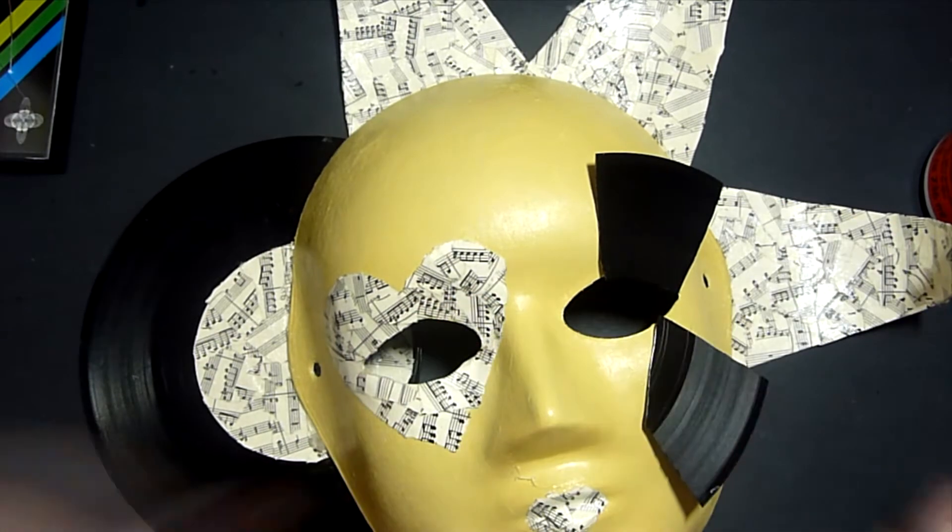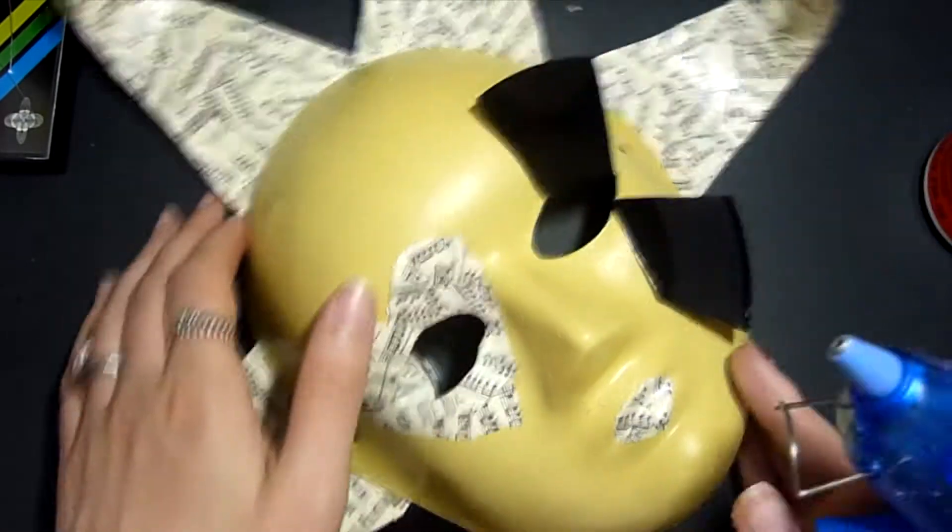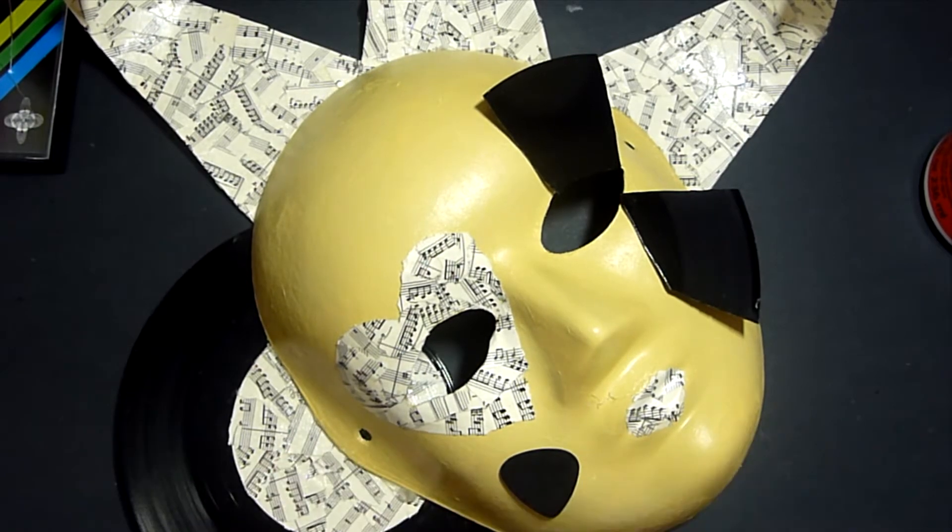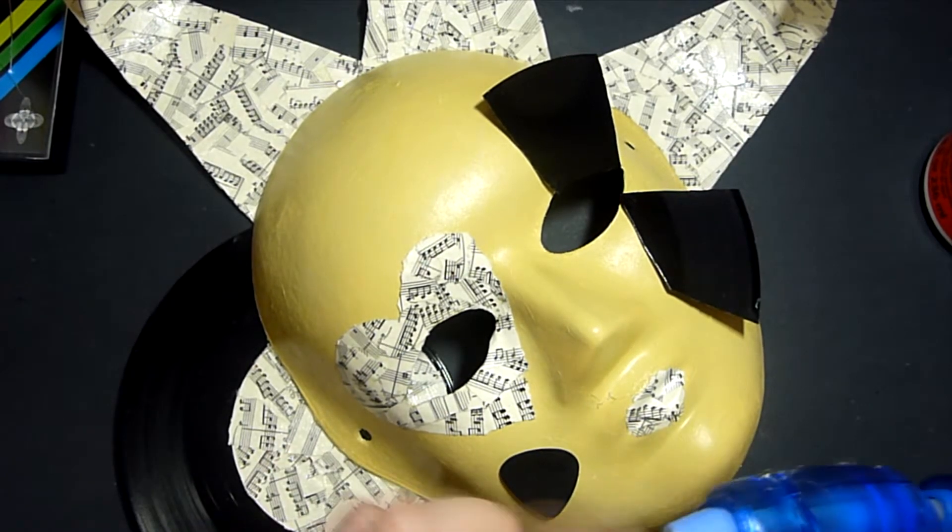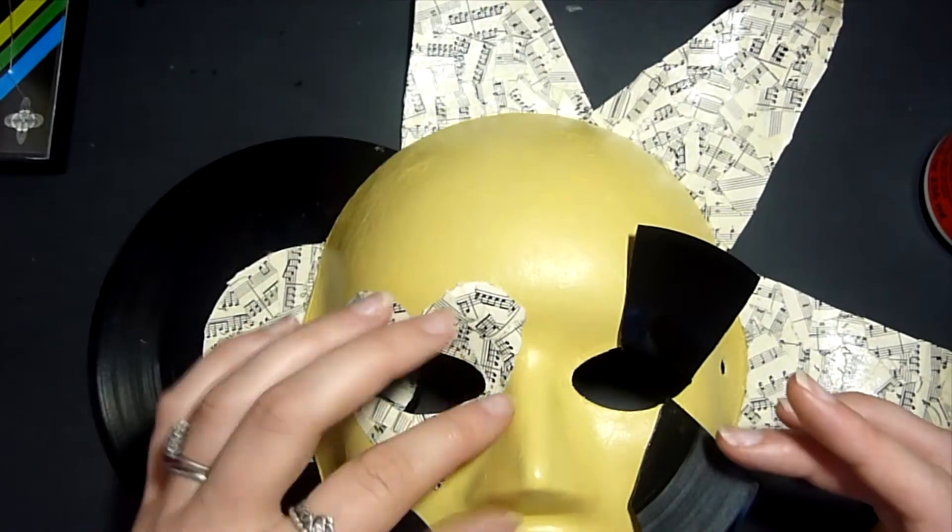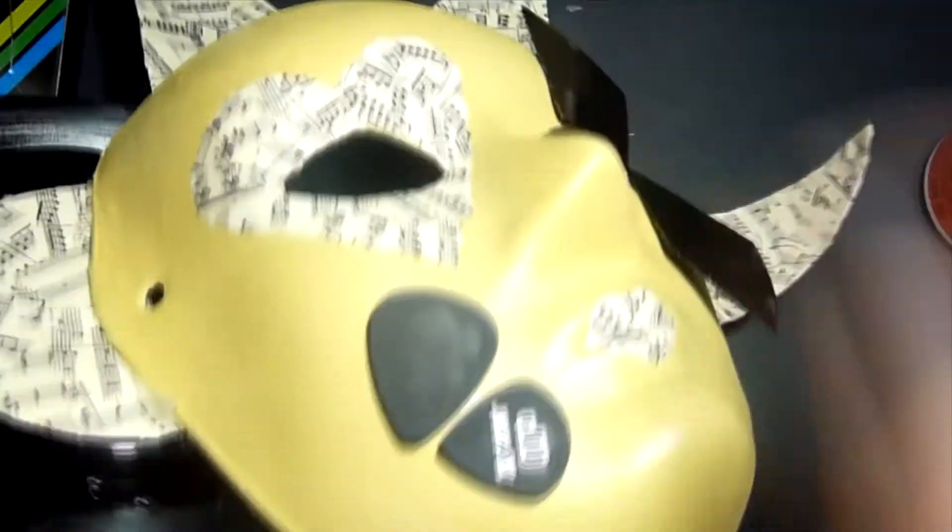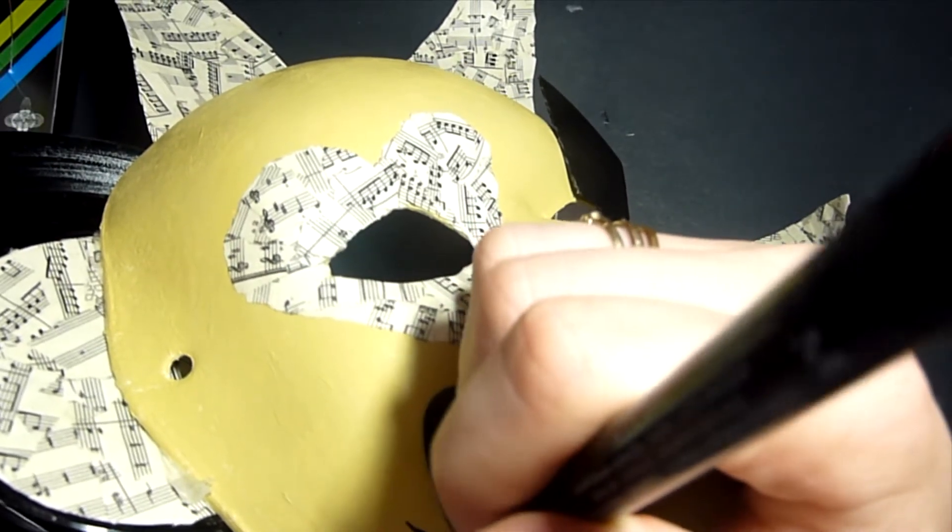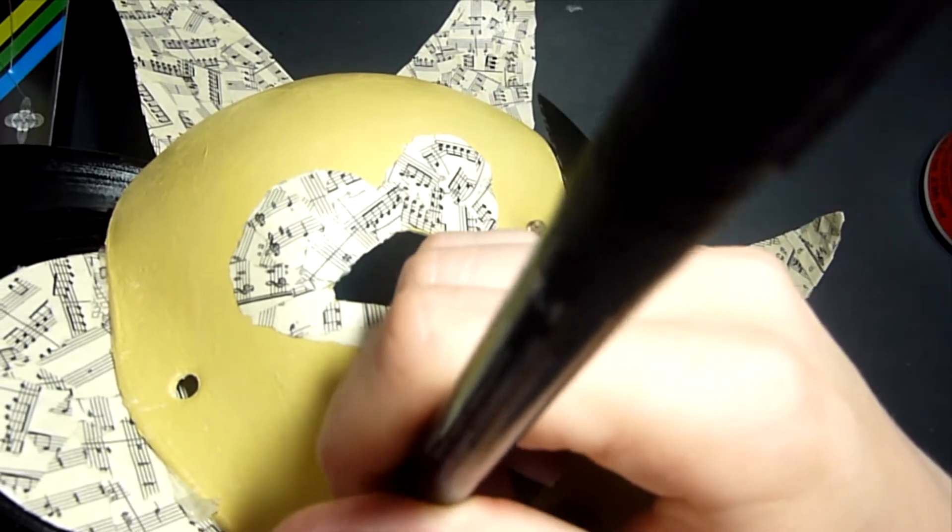I also added some of the excess vinyl record which I previously cut out from the one that I stuck to the mask. I thought this looked quite cool - I think they kind of look like fancy eyelashes. I didn't want to waste it and I wanted to add a little bit more black because there's quite a lot of musical notes on the right hand side, so I wanted to balance it out.